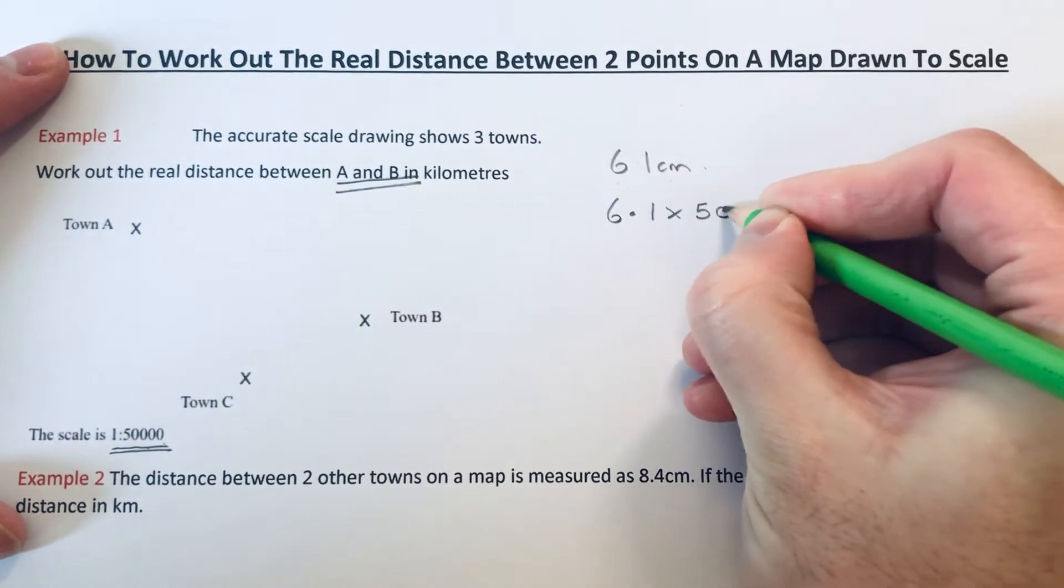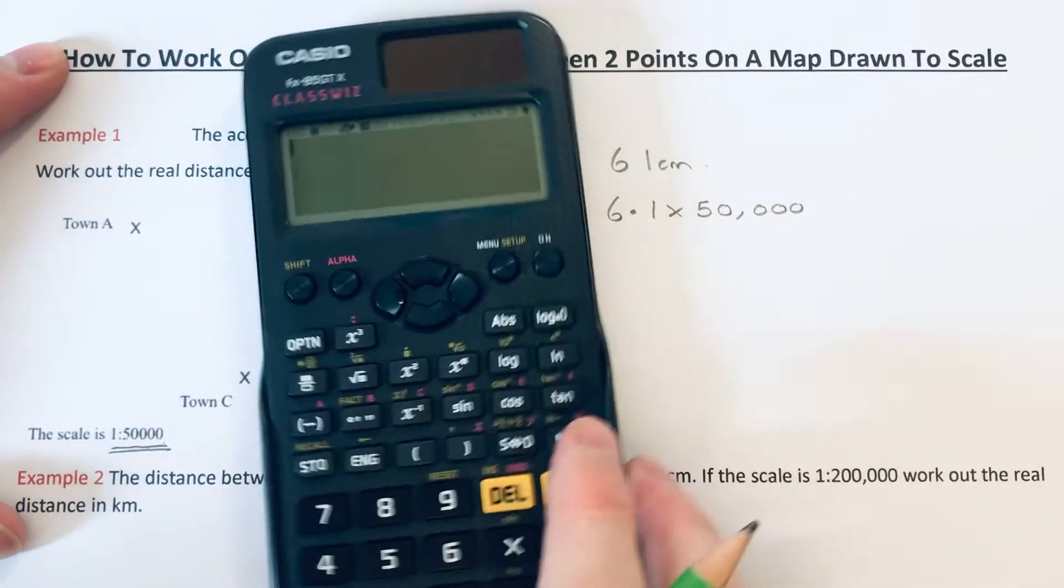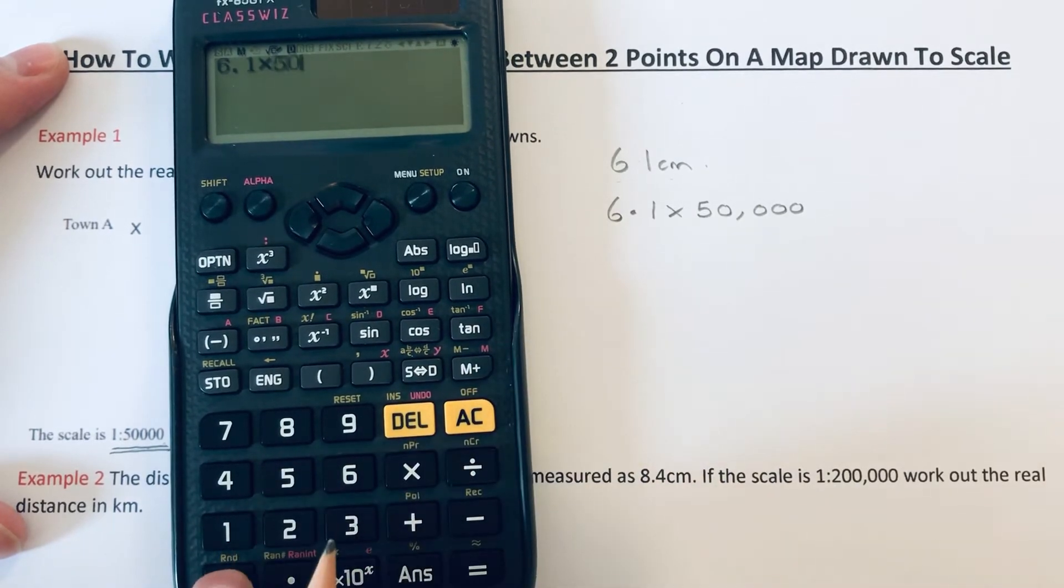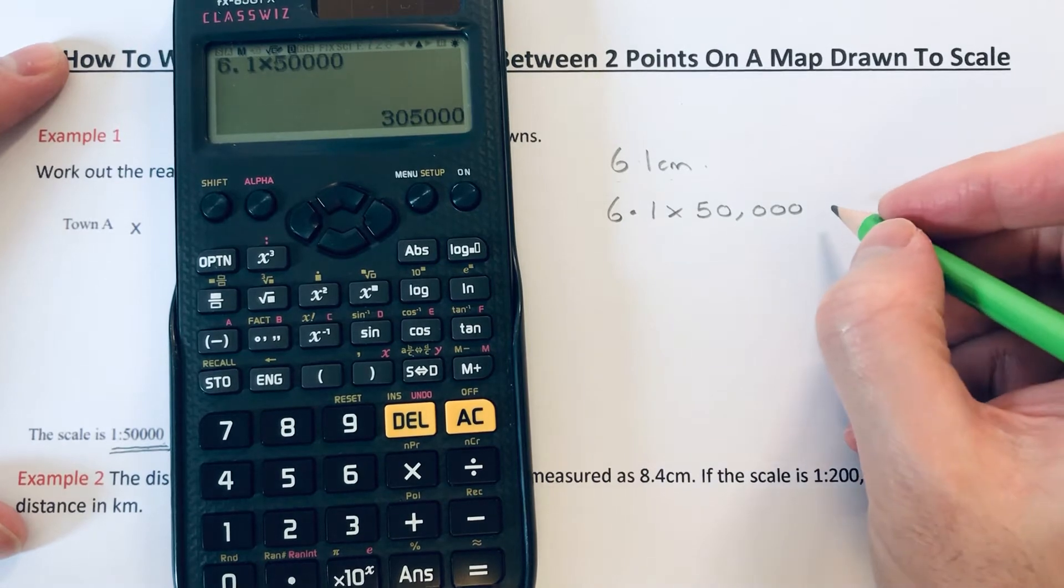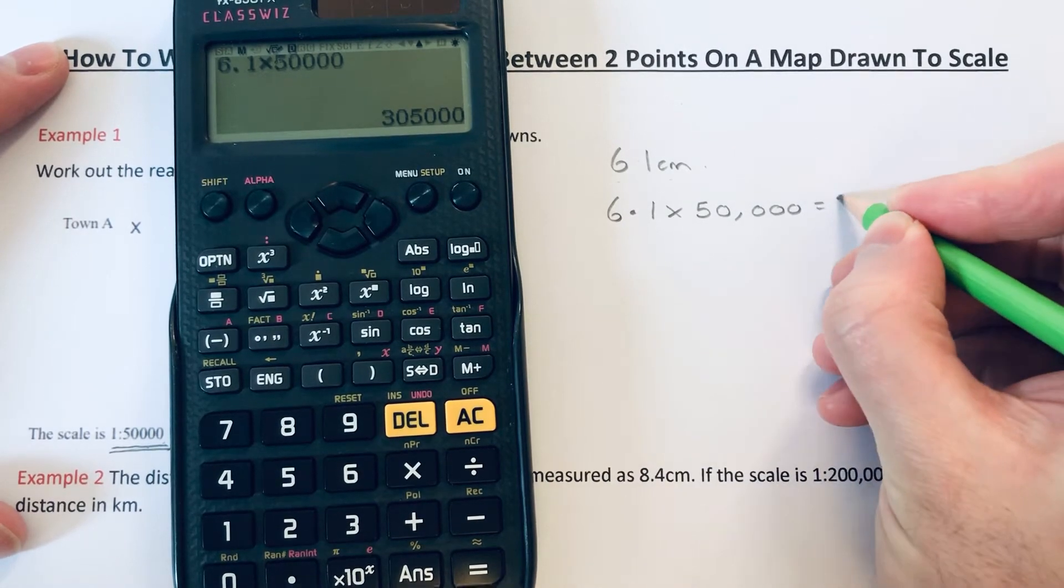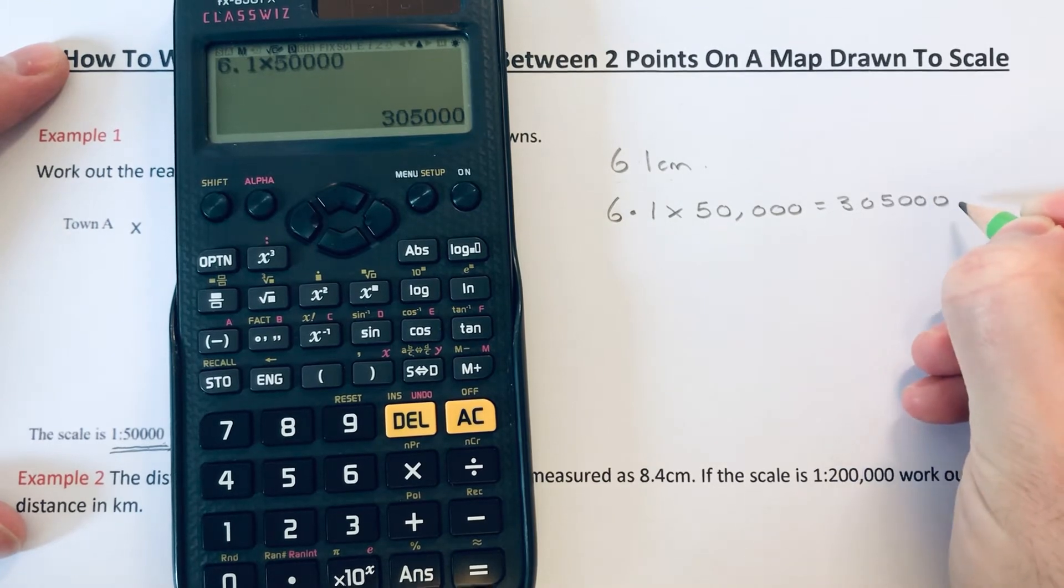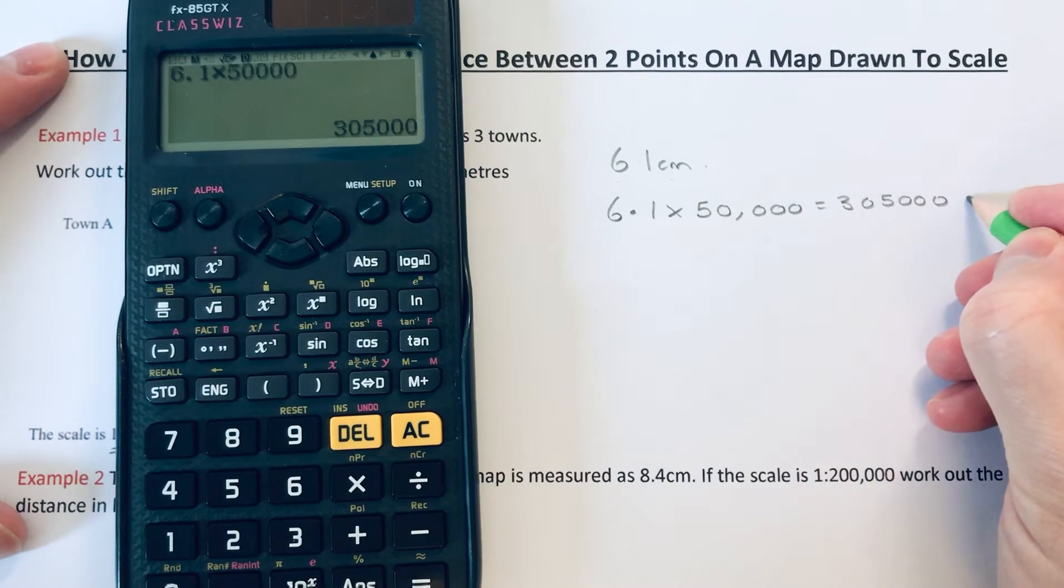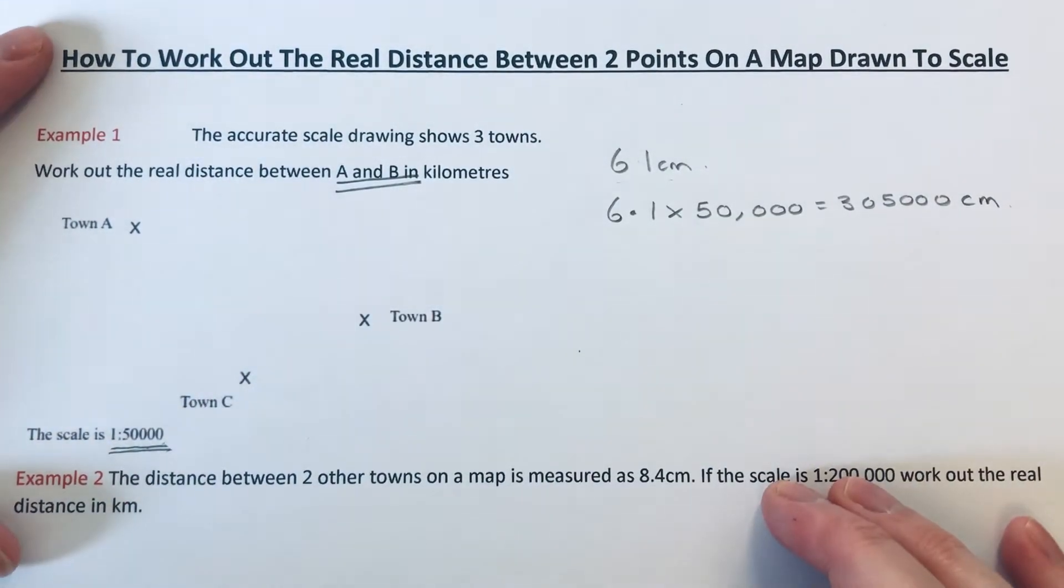So our next step is to times that 6.1 by the 50,000. I get the calculator, that's 6.1 times 50,000, which gives us 305,000. Since we measured the line in centimeters, this answer will come out in centimeters.